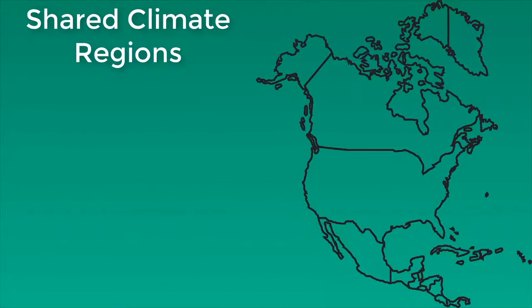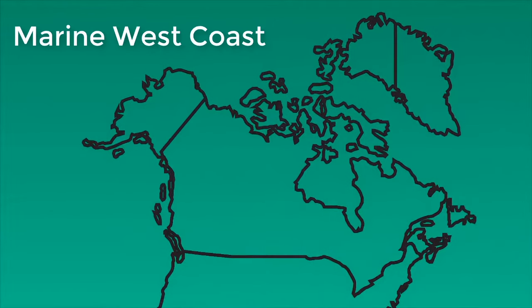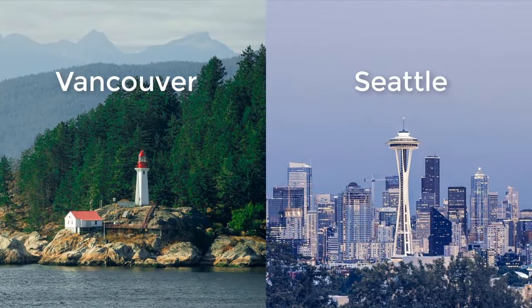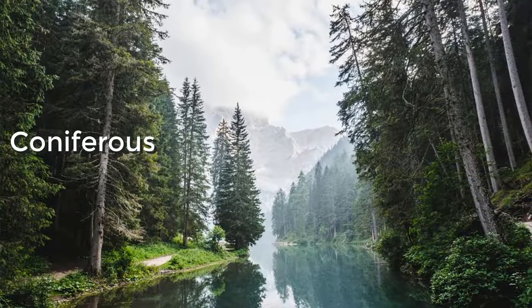Some of the major climate regions shared by both the United States and Canada are the marine west coast, the highlands, the semi-arid, and the humid continental. All of these regions at some point straddle the 5,525-mile U.S.-Canada border. The marine west coast climate region, stretching from the southeast corner of Alaska along the Canadian coast down to the southwest corner of Oregon, is characterized by steady temperatures and ample rainfall all year long. Vancouver and Seattle, both well known for rain, are two major cities within this region. Coniferous forest is the dominant ecosystem here.